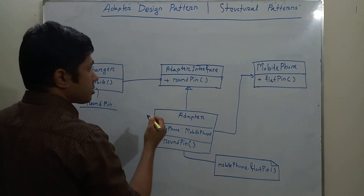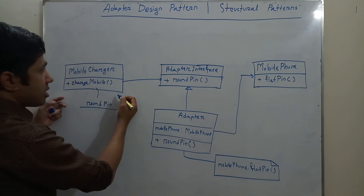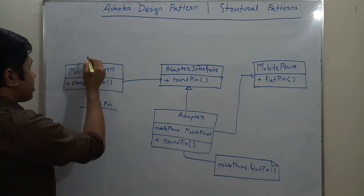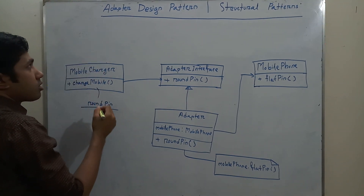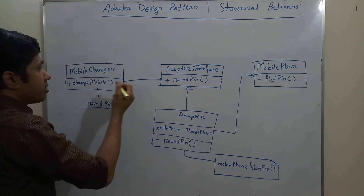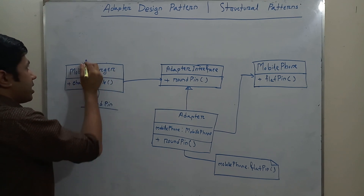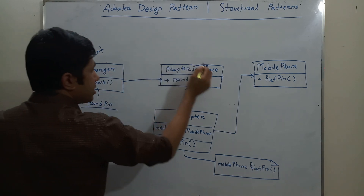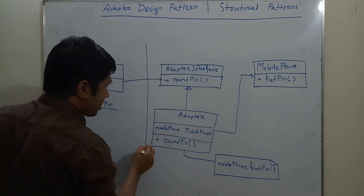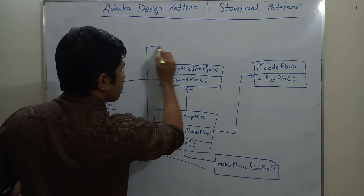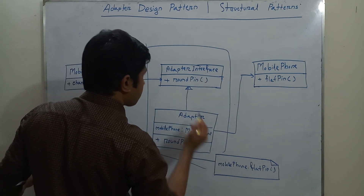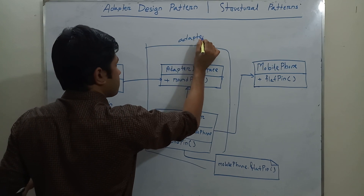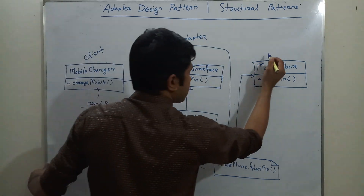So now we can use our mobile charger to charge the mobile phone through our adapter. This part is the client. In the adapter design pattern, the name of this part is client. This is the adapter part, and this is called the adaptee.